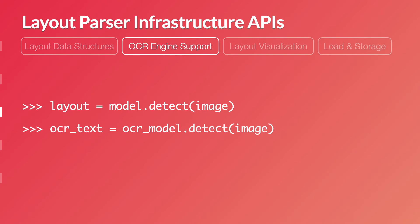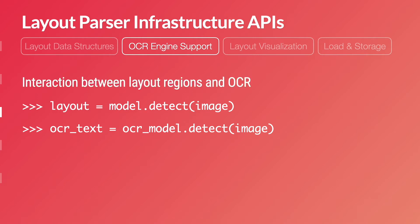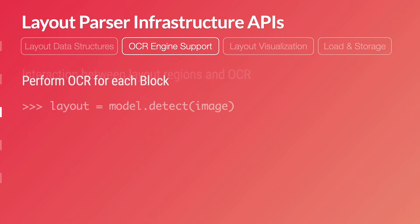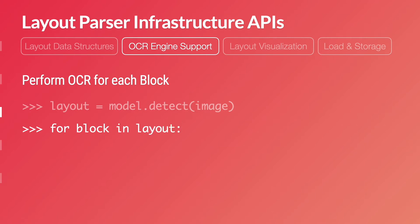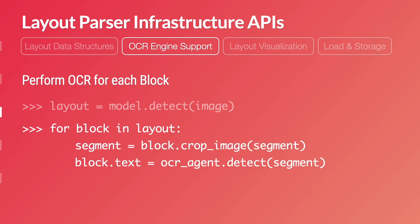OCR is also an important step in DIA. Layout Parser comes with support for OCR engines, and probably the most helpful part is that it enables interaction between detected layouts and OCR models. For example, performing OCR within each individual layout region can lead to better performance, as each region has simpler layout structure and smaller image size. To do that, you just iterate the blocks inside the layout, cut the image into segments, and run the OCR API to get the content text. No data export, conversion, or reloading is required.